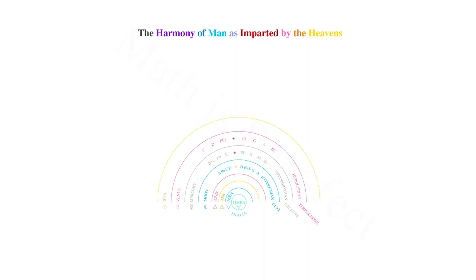The sphere of the sun is the realm of Melpomene, muse of tragedy, producing a dorian scale, known for its virile and strong nature. Beginning with the lycanos hypaton, or D, it is the fifth from D to A, followed by the fourth from A to D.